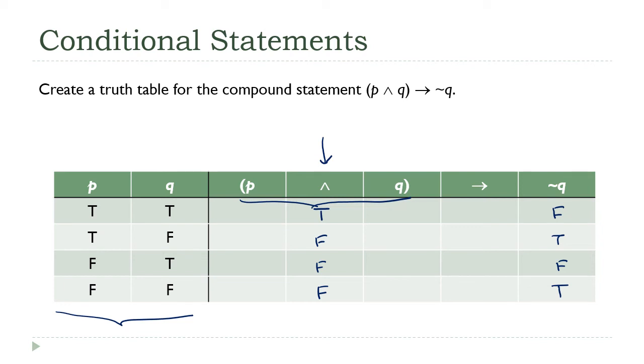So now to get my conditional, I'm going to compare this column and this column. I have a way of remembering this: a conditional is only false if you have a T on the left and an F on the right. So where do I have that? Well, on the first row. On the first row I've got a T and an F, so this is false. Everything else is true. And now we're done. That's my final result.